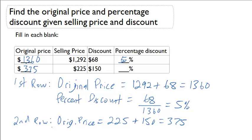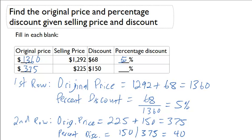That will now let us find our percent discount. Our percent discount is going to equal the discount of $1.50 divided by $3.75, which gives us 40%.